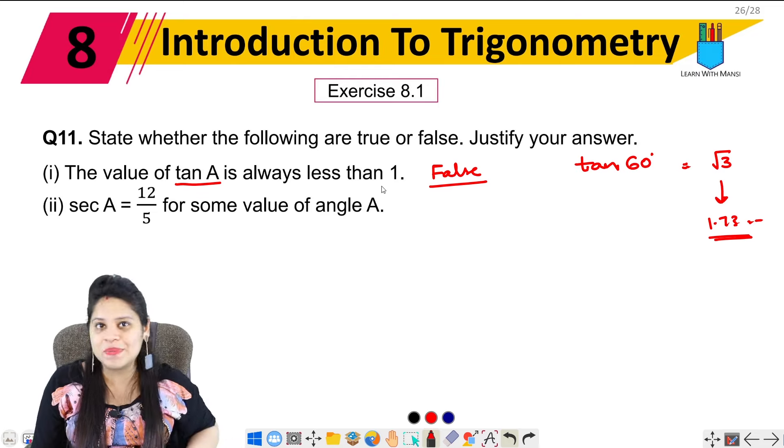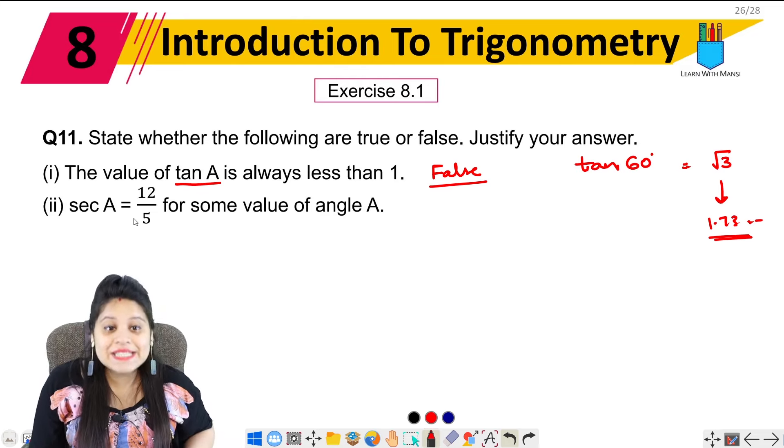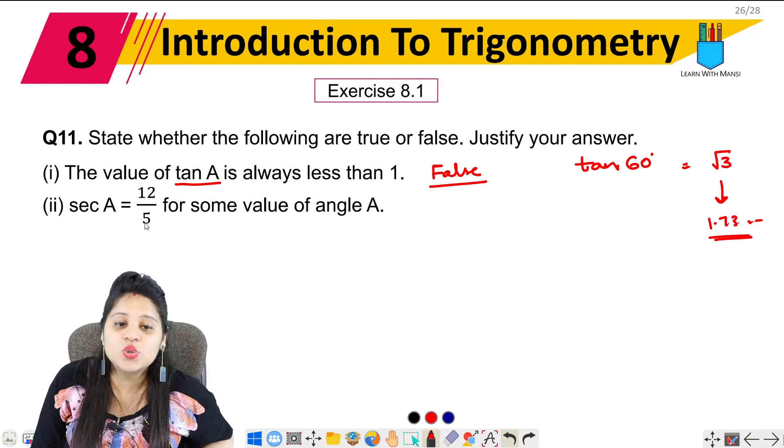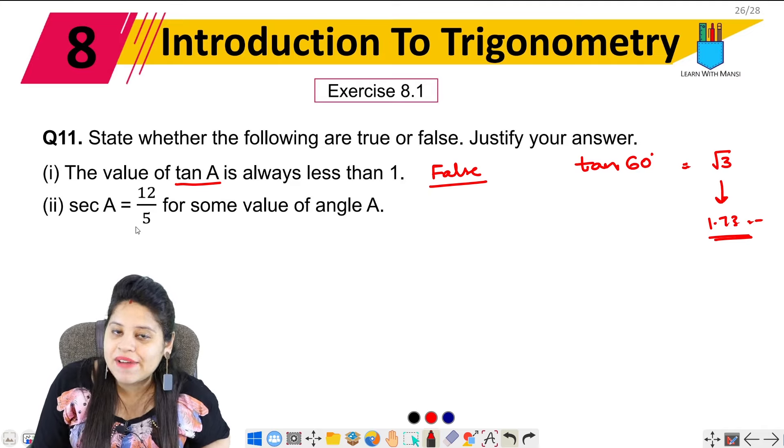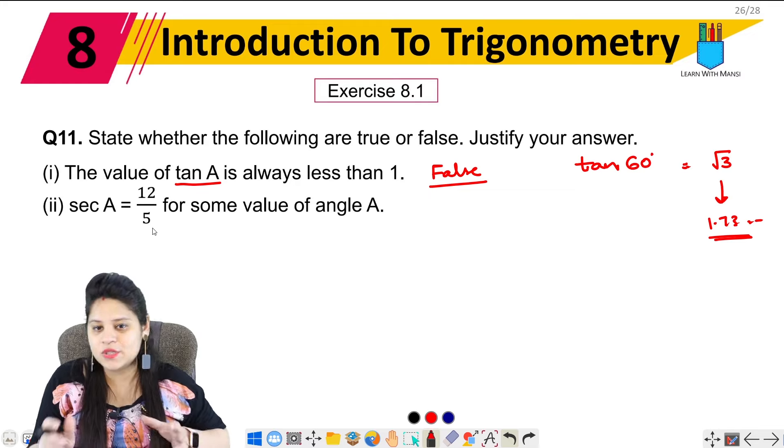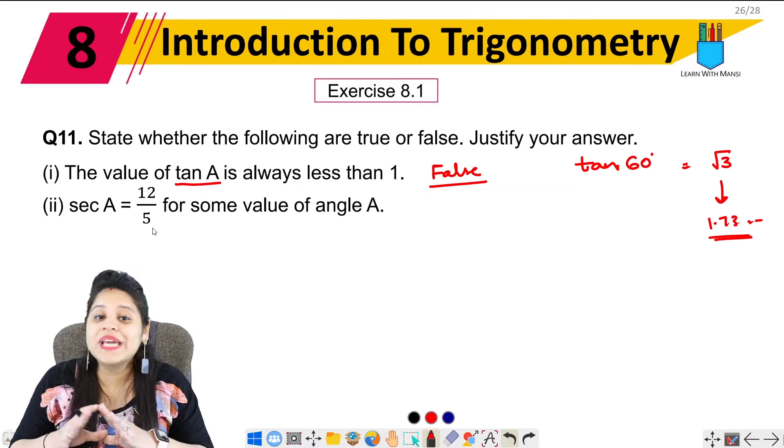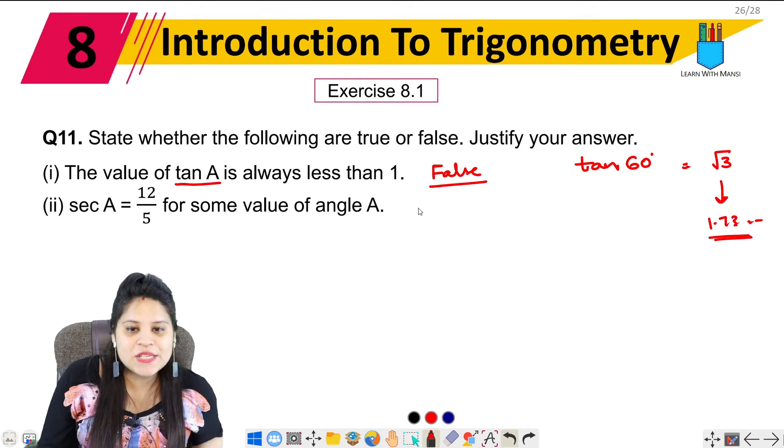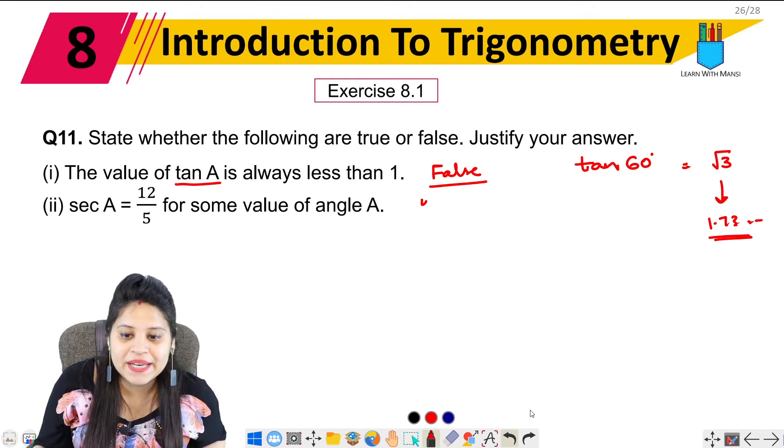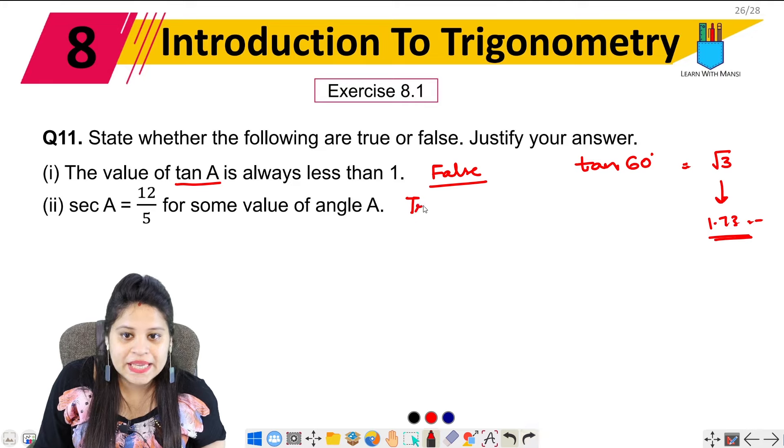Next is sec A equals to 12 upon 5 for some value of angle A. Now what sec A can be 12 upon 5? I will do it. But you will understand it properly when we will do the last part of this question. So let's explain it first. This statement is true, that it can be a value.